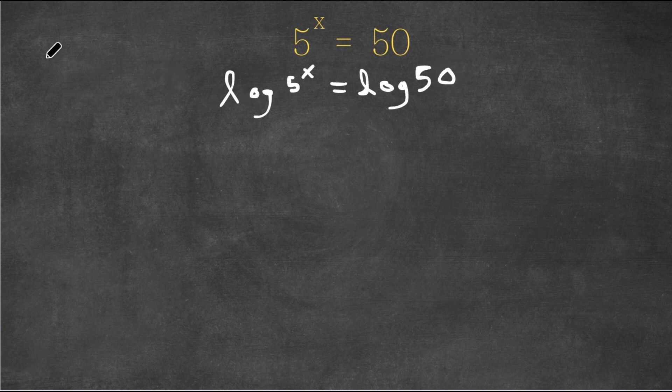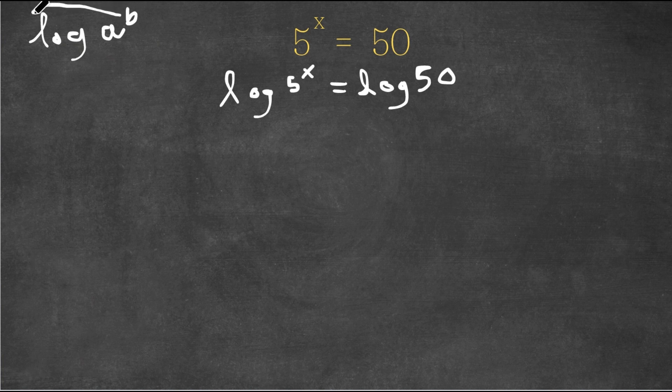An important property of logarithms is that let's say we have log a to the power of b. I can actually move this exponent b to the front of the logarithm. So this is equal to b times log a.